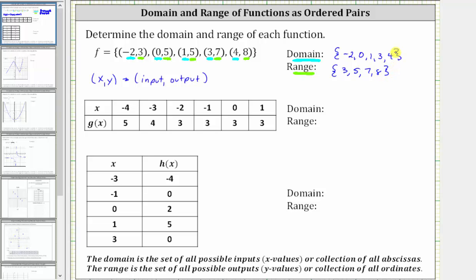Next we have a function given as a horizontal table, where again the domain is a set of all possible x-values or inputs, and therefore the domain is negative four, negative three, negative two, negative one, zero, and one. And the range is a set of all possible outputs or y-values, which are the function values: five, four, and three.